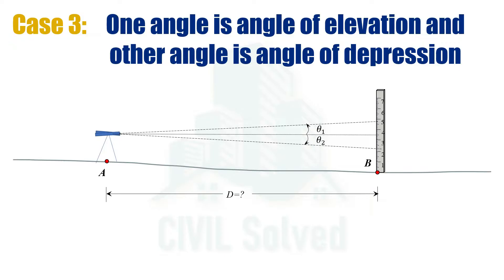Let's say that the difference of the staff readings at θ₁ and θ₂ is s. The v is the vertical distance taken from the axis of instrument to the point where the staff reading is taken at θ₂, and the remaining distance would be the difference of s and v.